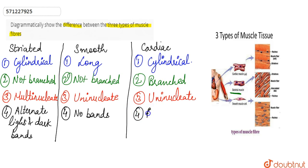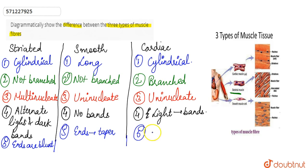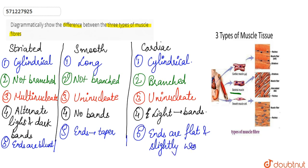In the case of cardiac muscle, we can see some light-colored or very faint bands. Regarding the ends: striated muscles have blunt ends, smooth muscles have tapered or rounded ends, and cardiac muscle ends are flat and slightly wavy.